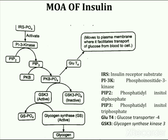Insulin lowers the glucose level in blood by increased transport of glucose from blood to cells and converts it into glycogen, thus lowering elevated diuresis and thirst, normalizing carbohydrate, protein, and fat metabolism, and reducing diabetic coma.